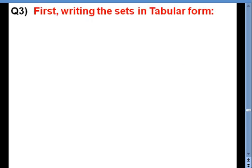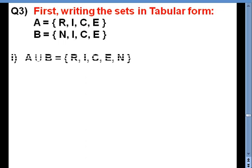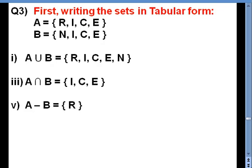Question 3 gives sets in set builder notation, so first we write them in tabular form. Set A equals {R, I, C, E} and set B equals {N, I, C, E}. A union B equals {R, I, C, E, N} — all elements without repetition. A intersection B equals {I, C, E} — the common elements. A minus B equals {R} — elements of A not in B. B minus A equals {N} — elements of B not in A.